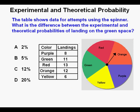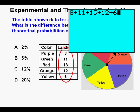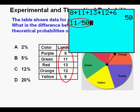Next problem: the table shows the data for attempts using the spinner. What is the difference between the experimental and theoretical probabilities of landing on the green space? Difference means we find the experimental probability and subtract the theoretical probability. To find the experimental probability, we add up the number of attempts in the landings column. We get 50 spins or attempts, so 50 becomes our denominator. We take the number of green landings divided by the total: 11 divided by 50. We get an experimental probability of 0.22.